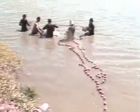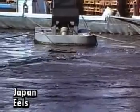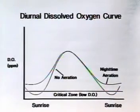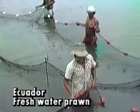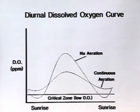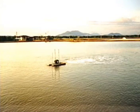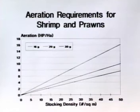The oxygen transfer rate of an aerator depends on the level of dissolved oxygen in the pond. The highest oxygen transfer rate occurs when the dissolved oxygen level is low, while the lowest oxygen transfer rate occurs when the dissolved oxygen levels are near saturation. The amount of aeration required is based on animal stocking density — the greater the density, the more aeration required.